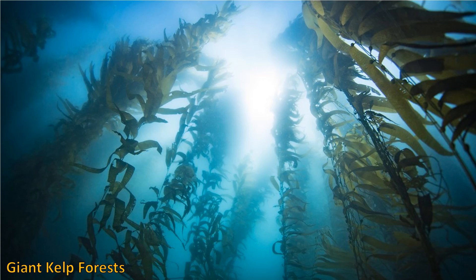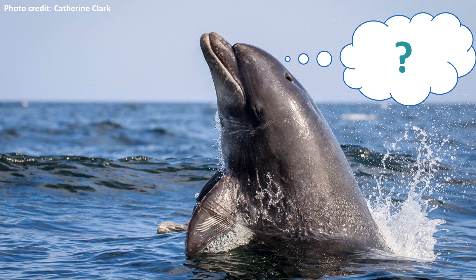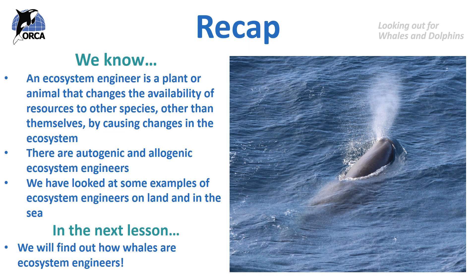So do you think whales, dolphins and porpoises are ecosystem engineers? They definitely are, and we will learn all about this in the next lesson. To recap, we now know that an ecosystem engineer is a plant or animal that changes the availability of resources to other species, other than themselves, by causing changes in the ecosystem. We now know that there are autogenic and allogenic ecosystem engineers, and we've looked at some examples of ecosystem engineers on land and in the sea.